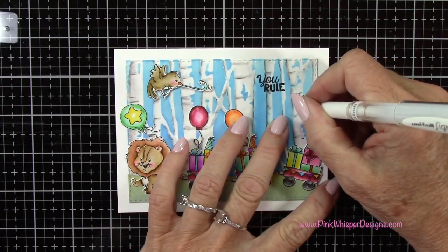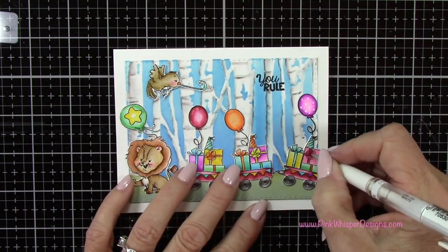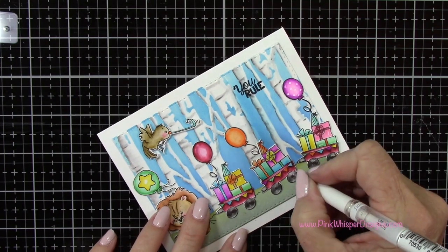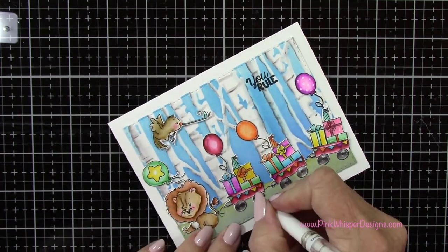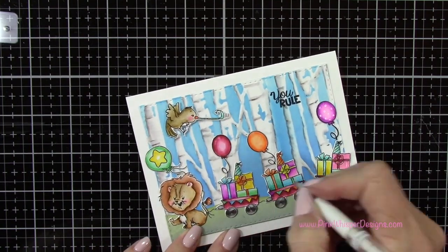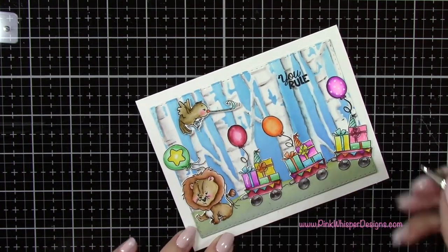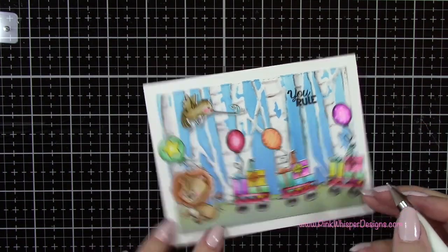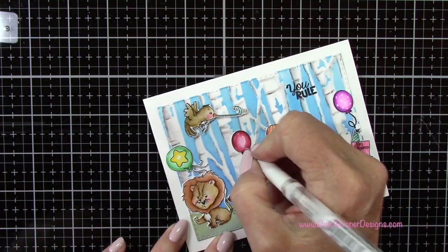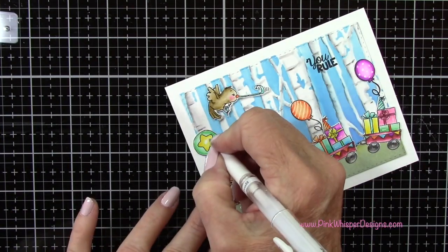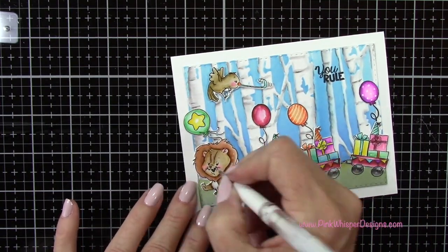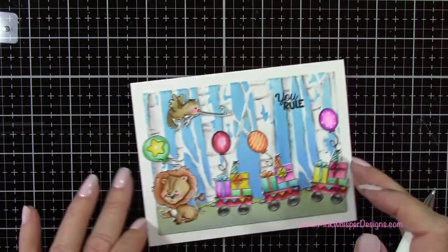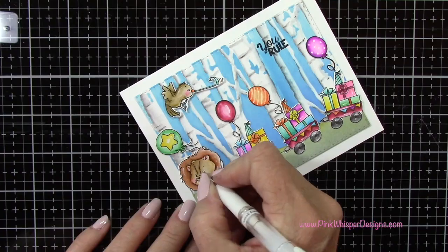So now I've got my Signo Uni-Ball white gel pen and I'm going to add some highlights and some little polka dots to some of my balloons here. And I'm adding some highlights to those wheels as well. And this will just make everything pop out just a little bit more. And I'm adding a few little stripes to this balloon here. So it's fun. This is fun to do. You could also take that black permanent marker as well and add balloons and stripes with that as well. So that would be kind of cute.